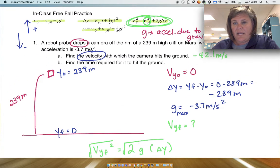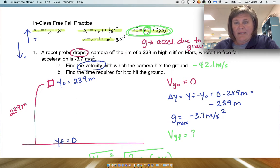So the answer here is -42.1 meters per second. That's the velocity that the camera will hit the ground with. We've got to include direction because it asks for velocity and not the speed. So now it asks for the time.